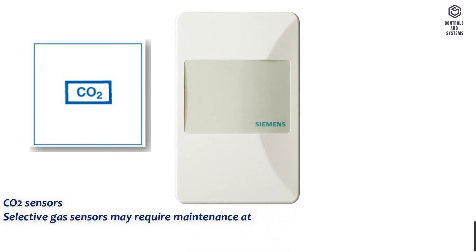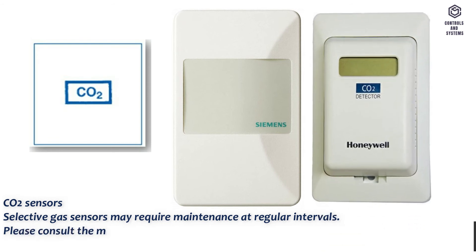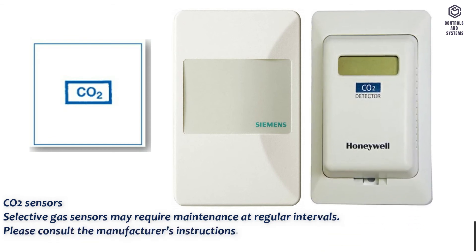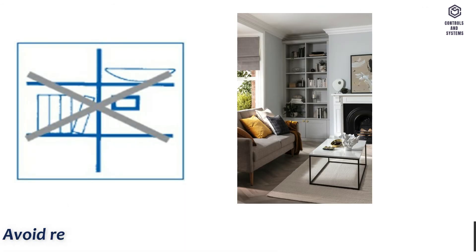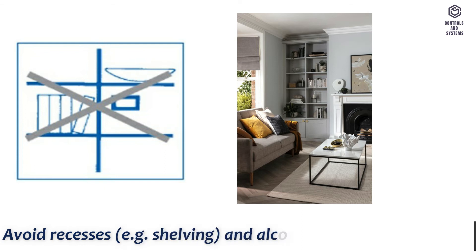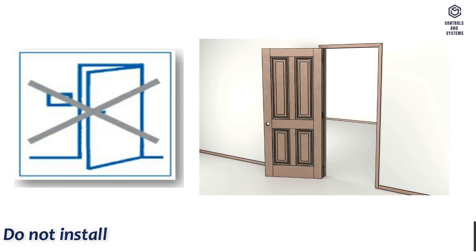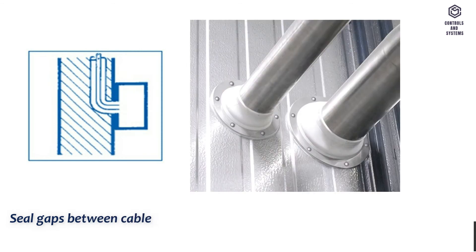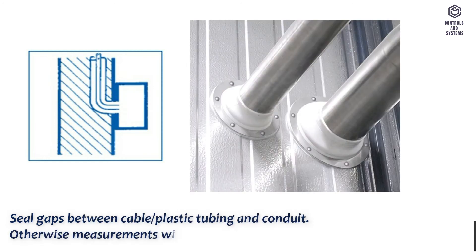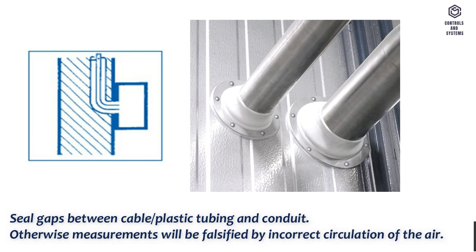CO2 sensors and selective gas sensors may require maintenance at regular intervals — please consult the manufacturer's instructions. The sensor must be installed in an accessible location. Avoid recesses such as shelving and alcoves. Do not install directly adjacent to doors or behind curtains. Seal gaps between cable, plastic tubing, and conduit; otherwise, measurements will be falsified by incorrect circulation of air.